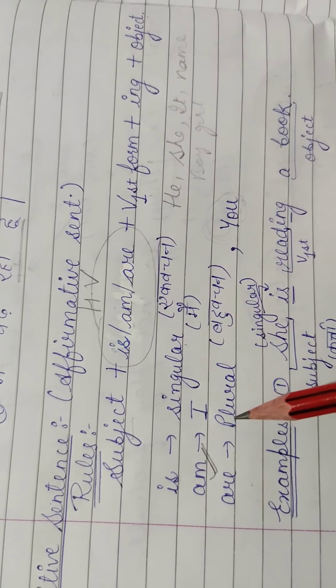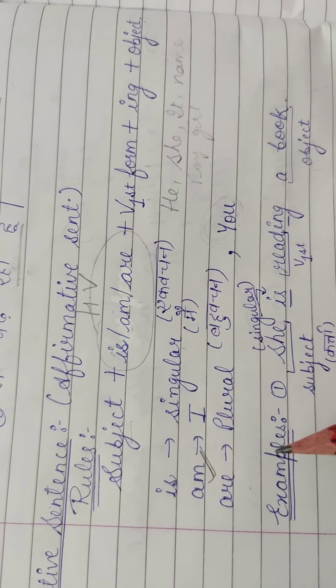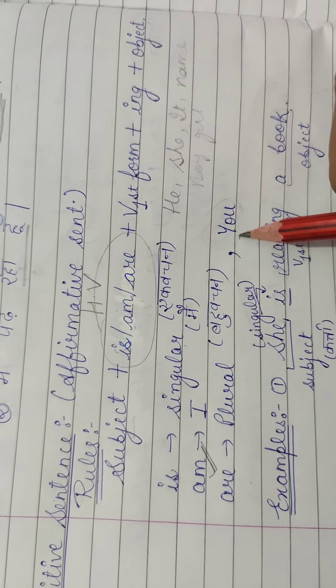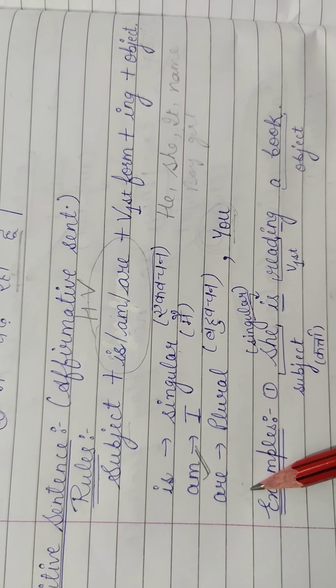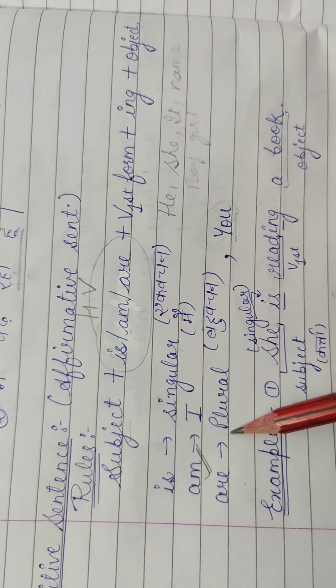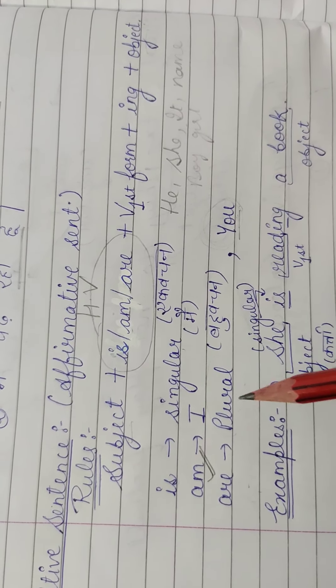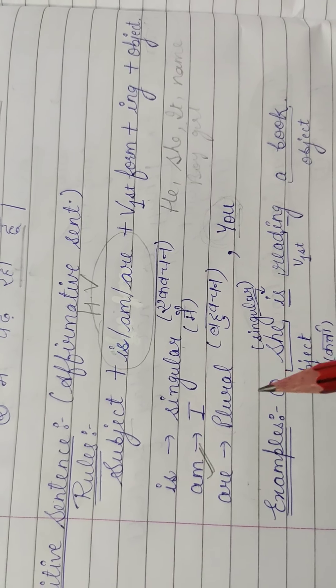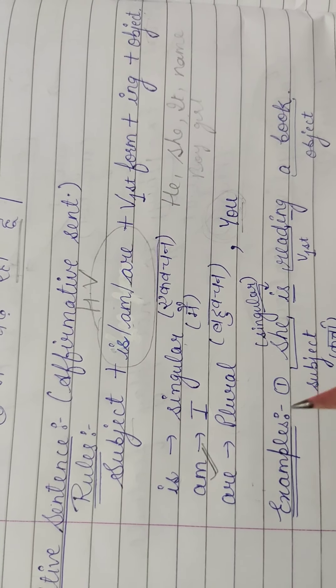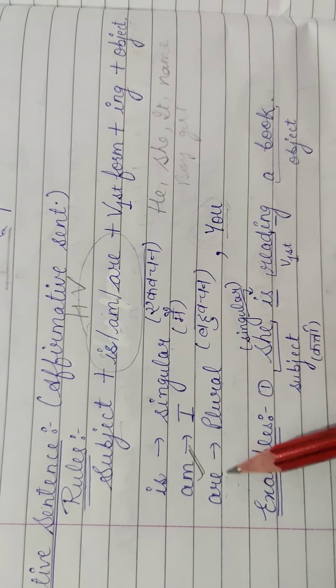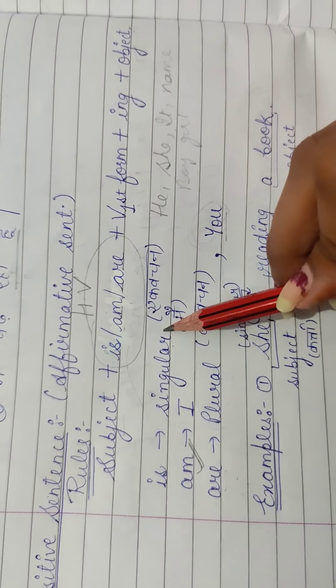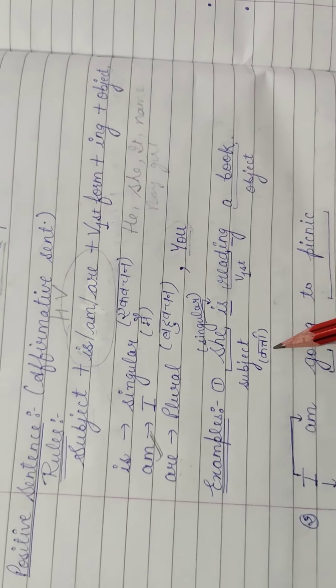Ab you first person, second person, third person kya hai? Ye humne pronoun me padha tha. To you ke saath bhi, humeisha are aata hai, aur joh bhi jitne bhi plural hote hai - they, these, those, boys, girls, like jitne bhi aapke plural hongay, sab ke saath kya aega? Are. To helping verb aapko samaj aayega, kis ke saath kya aega?